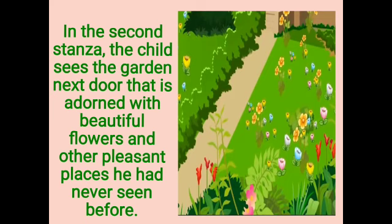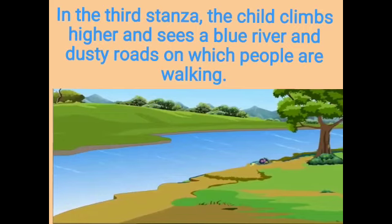Other than the garden, he saw many pleasant places which he had never seen before. Moving on, the child sees a blue river. The river is blue because the water is absolutely clean, so it appears to be a sky's blue looking glass.